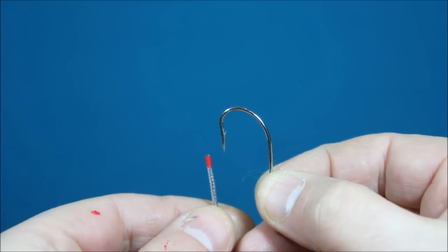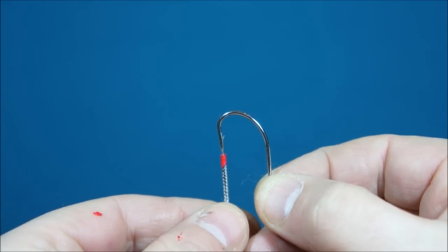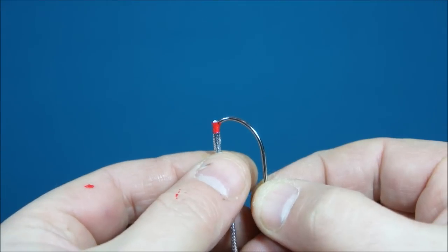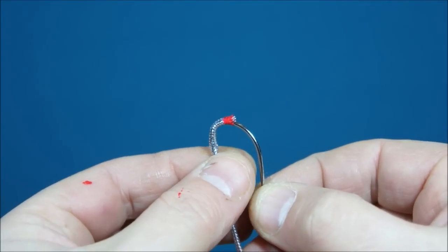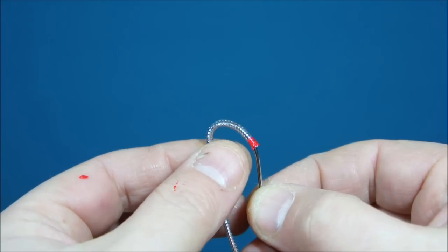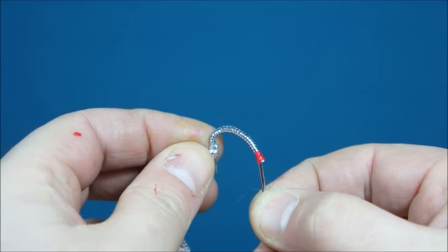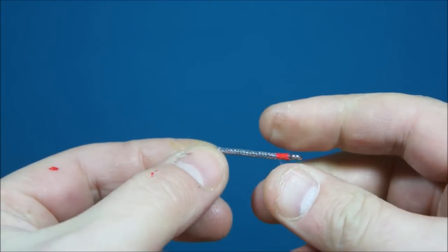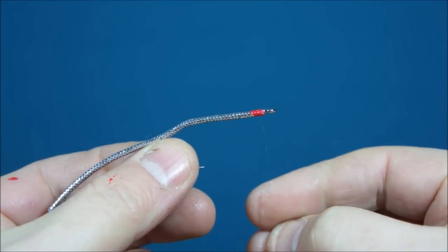So once the nail varnish has dried I can take my piece of tubing and just thread it up the hook, just carefully. Just till it gets kind of round the bend and then I can let the hook point out and just push it round. There we go.